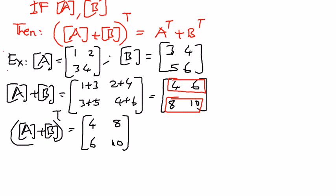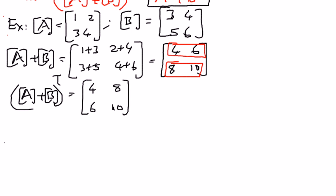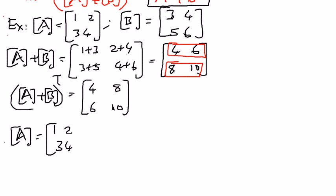The second part is to show this equals A transpose plus B transpose. Matrix A is 1, 2, 3, 4, so A transpose is found by writing rows as columns: 1, 3, 2, 4.